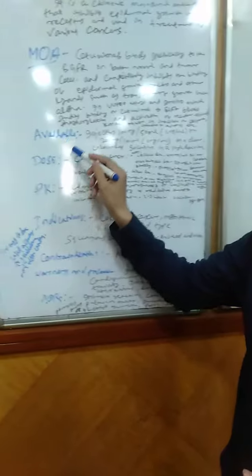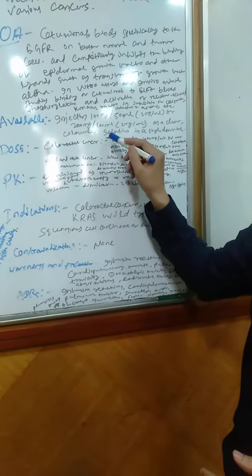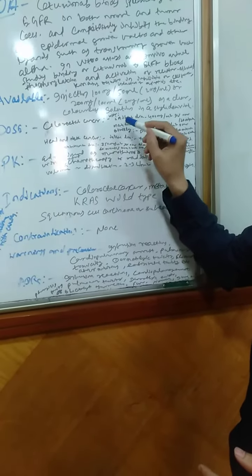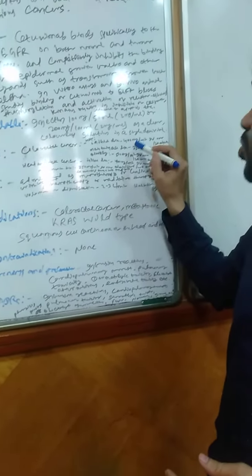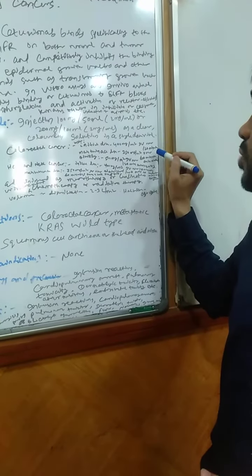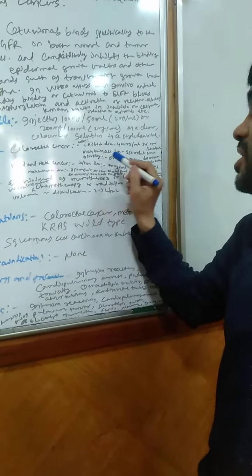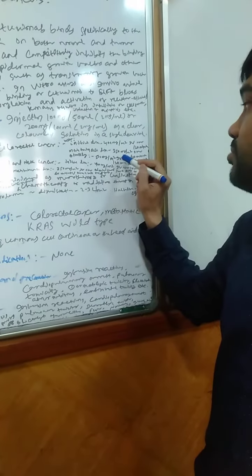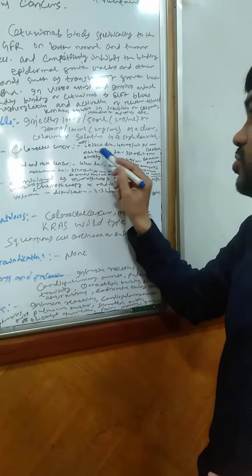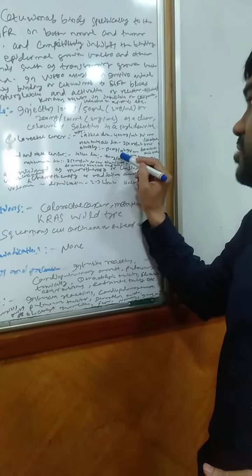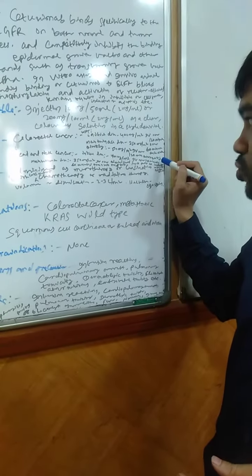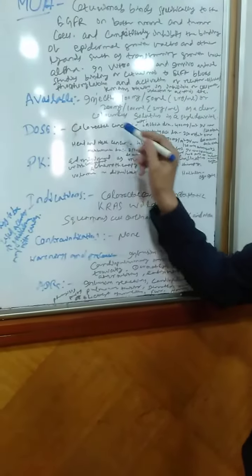Coming to the dose in colorectal cancer, there is a weekly regimen and a biweekly regimen. The initial dose is 400 mg per meter square intravenous over 120 minutes, and weekly maintenance dose is 250 mg per meter square over 60 minutes. For the biweekly regimen, there is 500 mg per meter square every 2 weeks.